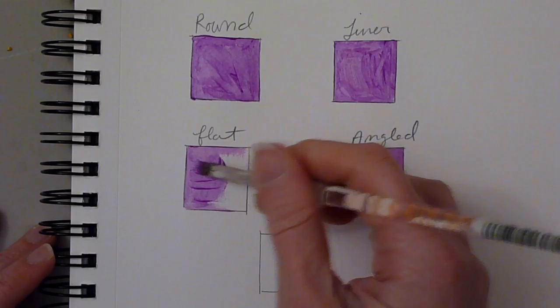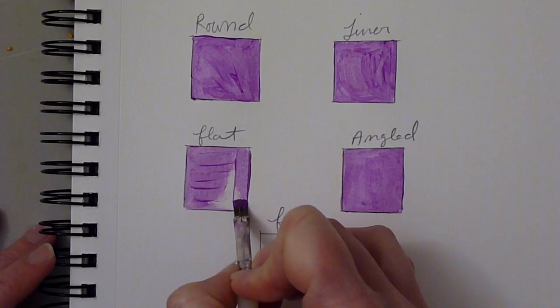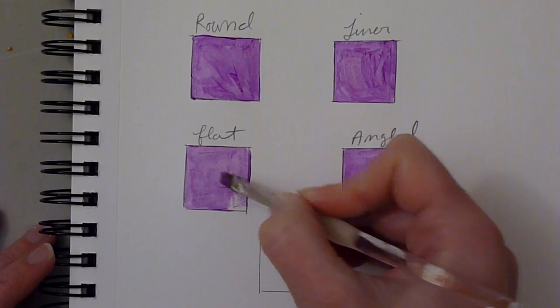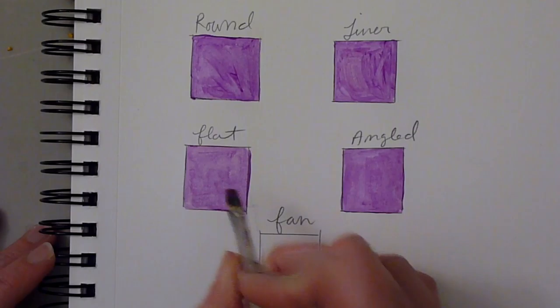Flat brush is definitely my favorite. I do think it's a very versatile brush and useful for lots of things. Depending on the size of your brush and the size of the area you're filling, it can be a very good brush for filling in spaces. You can get some nice lines with a flat brush.